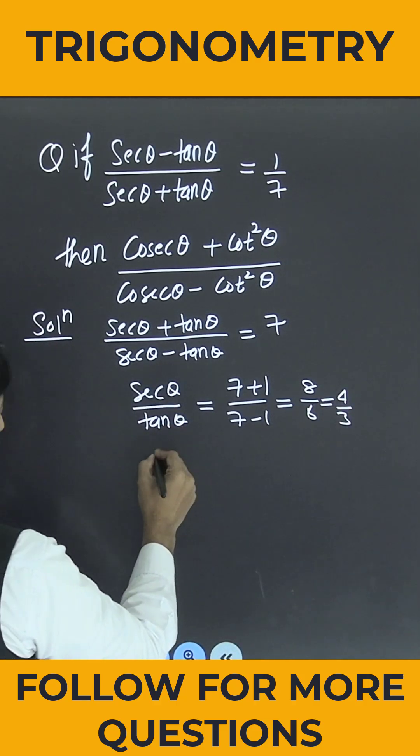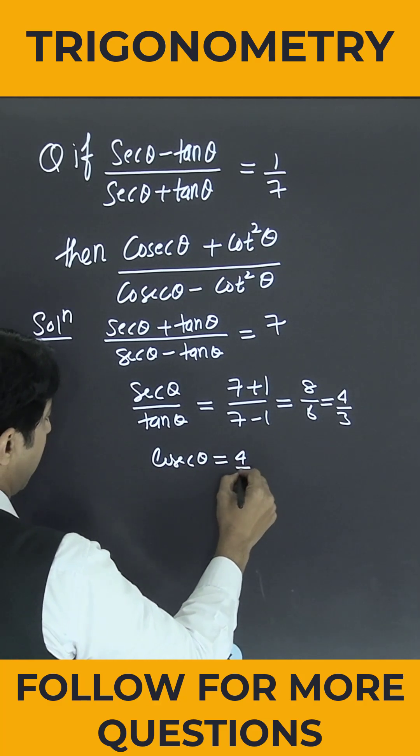Now what will it become? It will become cosec θ is equal to 4 by 3.